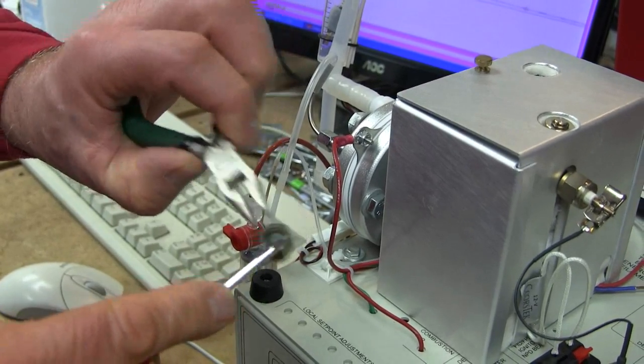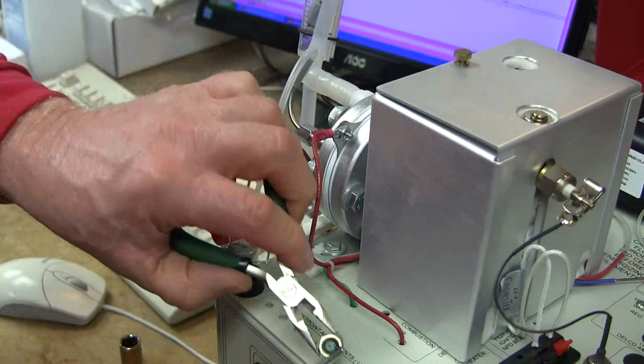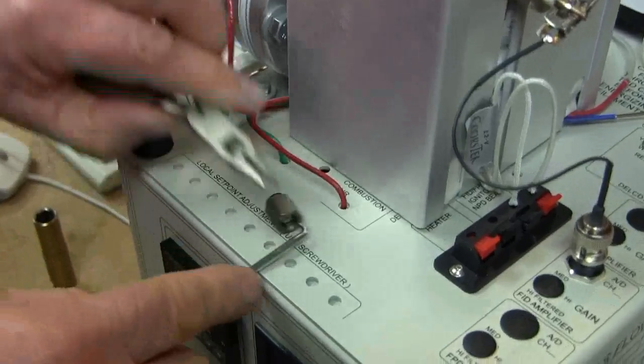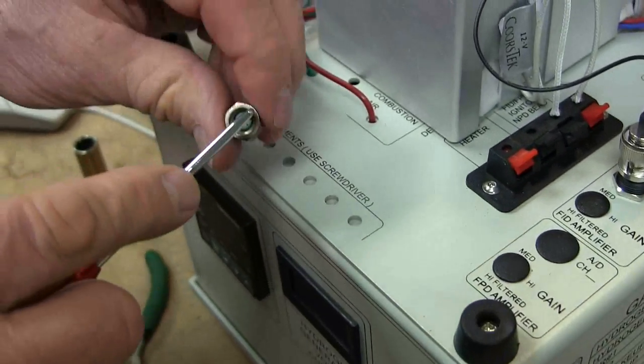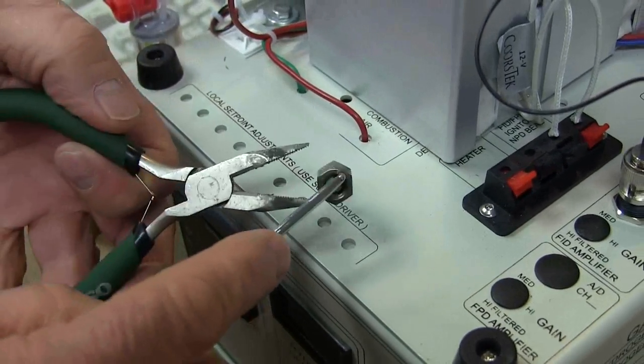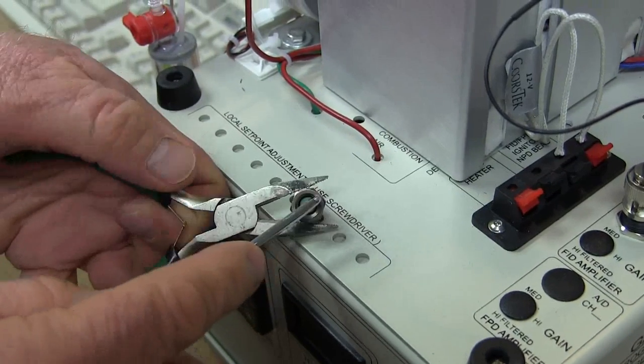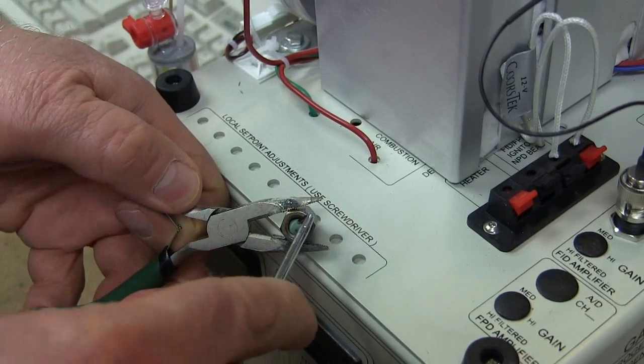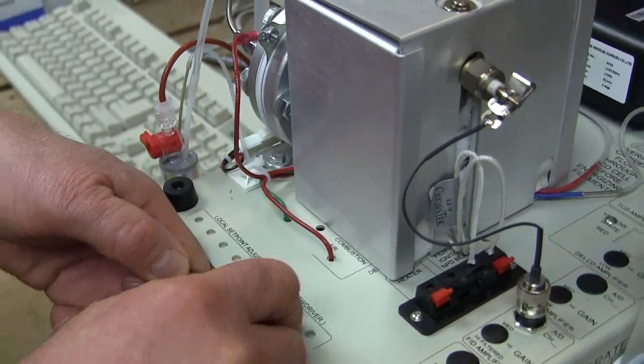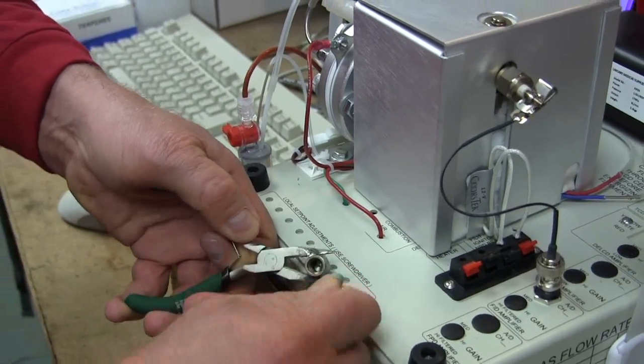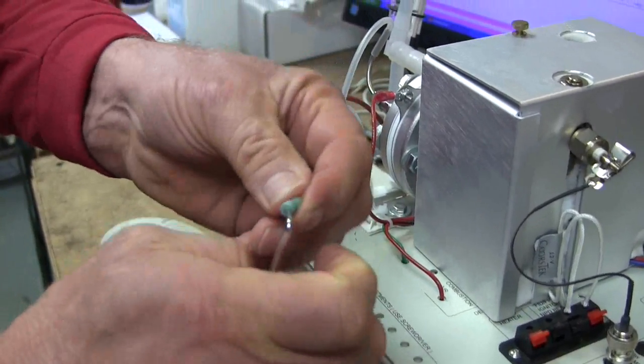So let's replace it. You need some kind of a hook thing, maybe an ice pick or something like that to dig the septum out. So we'll just hook onto that septum and then pull it out and it looks like this.